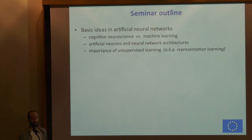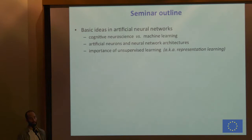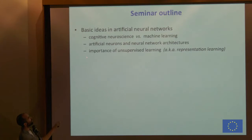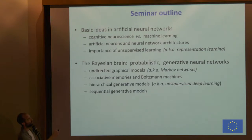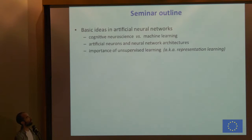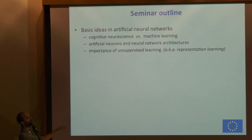My lecture will focus first on basic ideas in neural networks. I'll try to motivate the study of neural networks, first from a cognitive neuroscience perspective, but also from a machine learning perspective. I will just briefly introduce artificial neurons and then talk about more complex neural network architectures, and I will stress the importance of unsupervised learning, which is also called representation learning.